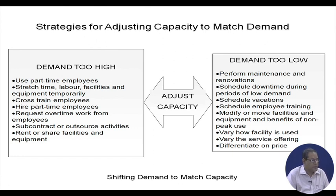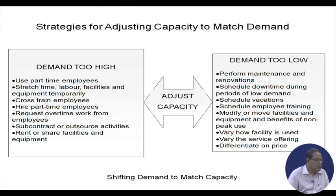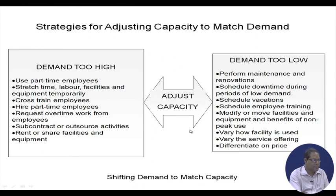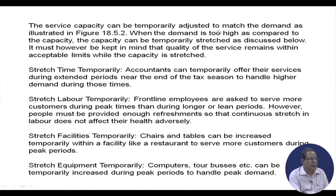Coming to strategies for adjusting capacity to match demand — when demand is too high, tactics include stretching time, labour, facilities, and equipment temporarily; cross-training employees; hiring part-time employees; requesting overtime work; subcontracting or outsourcing activities; and renting or sharing facilities and equipment. When the demand is too low, tactics include performing maintenance and innovations, scheduling downtime during low-demand periods, scheduling vacations and employee training, modifying or moving facilities and equipment. The service capacity can be temporarily adjusted to match the demand.